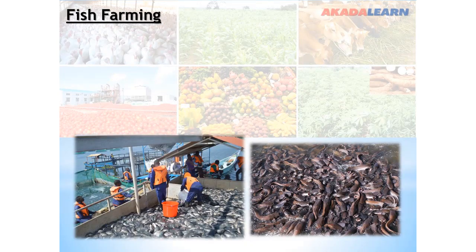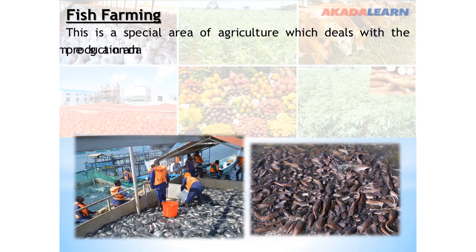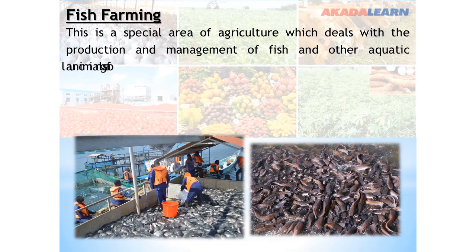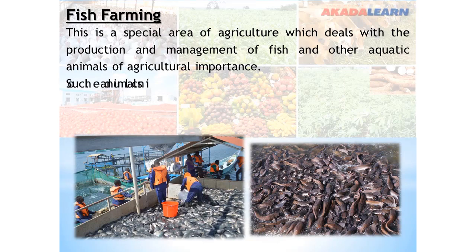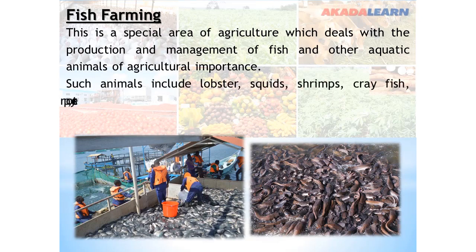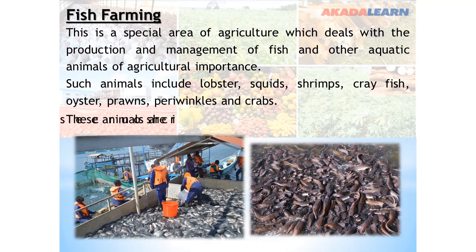Fish farming is a special area of agriculture which deals with the production and management of fish and other aquatic animals of agricultural importance. Such animals include lobsters, squid, shrimp, crayfish, oysters, prawn, periwinkles, and crabs. These animals are rich sources of protein.